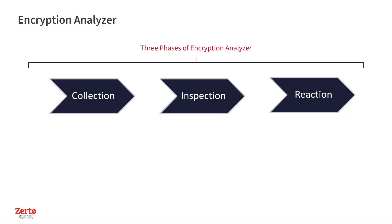The Encryption Analyzer has three main phases – Collection, Inspection, and Reaction, or CIR. Together, the CIR process makes up the combined real-time encryption detection in Zerto.